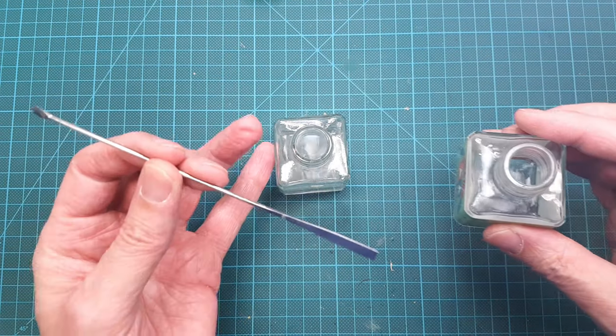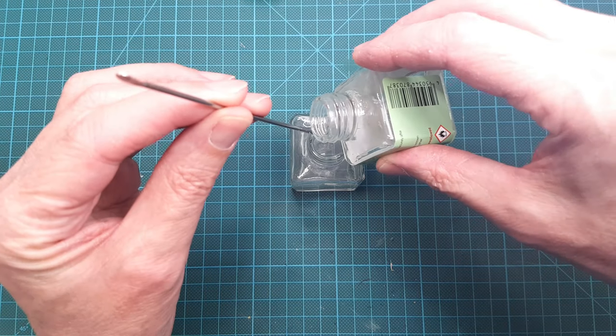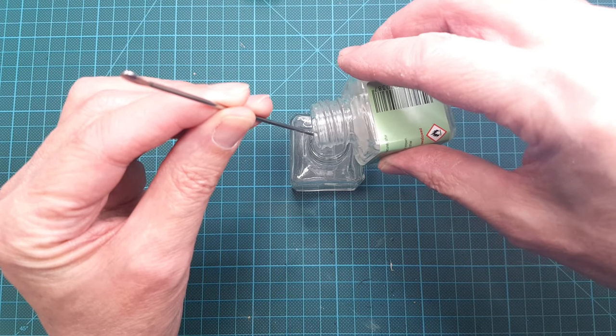So, let's get started. First I pour the glue into one jar that we are going to use to mix our liquid sprue in.